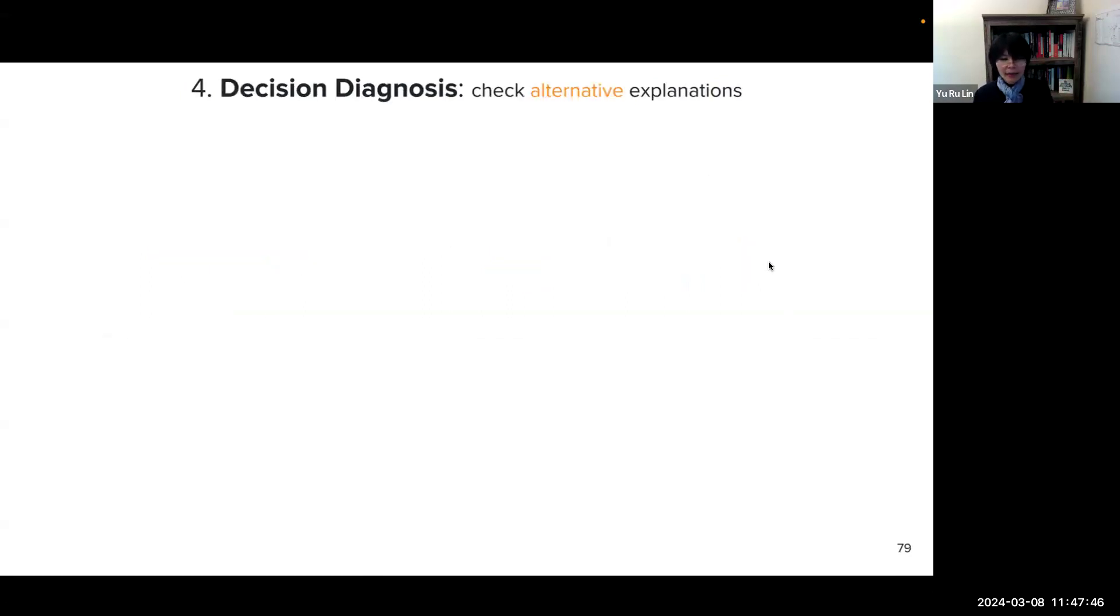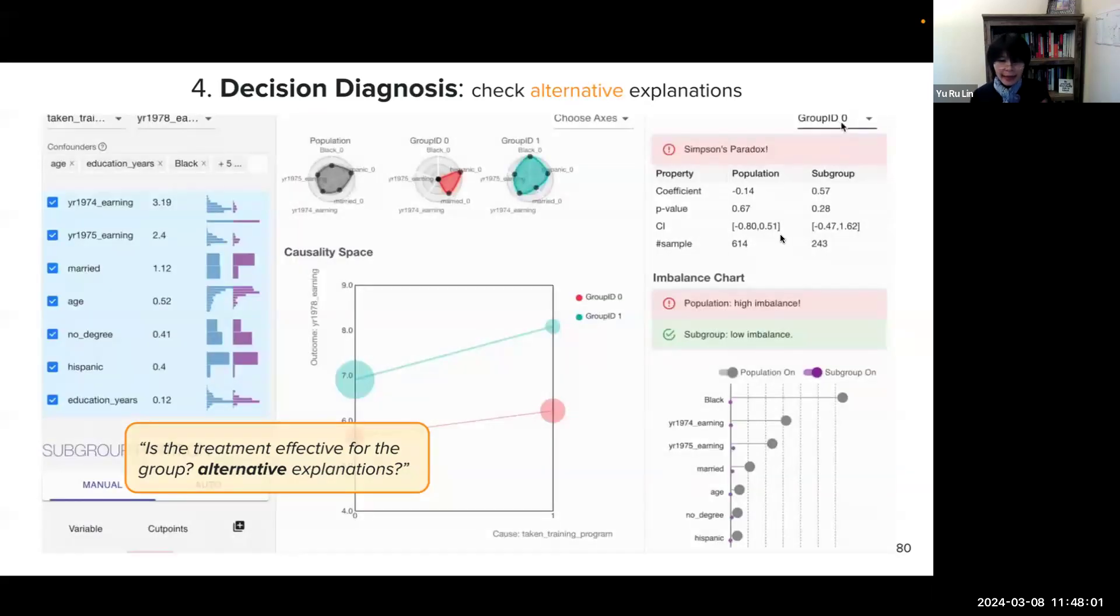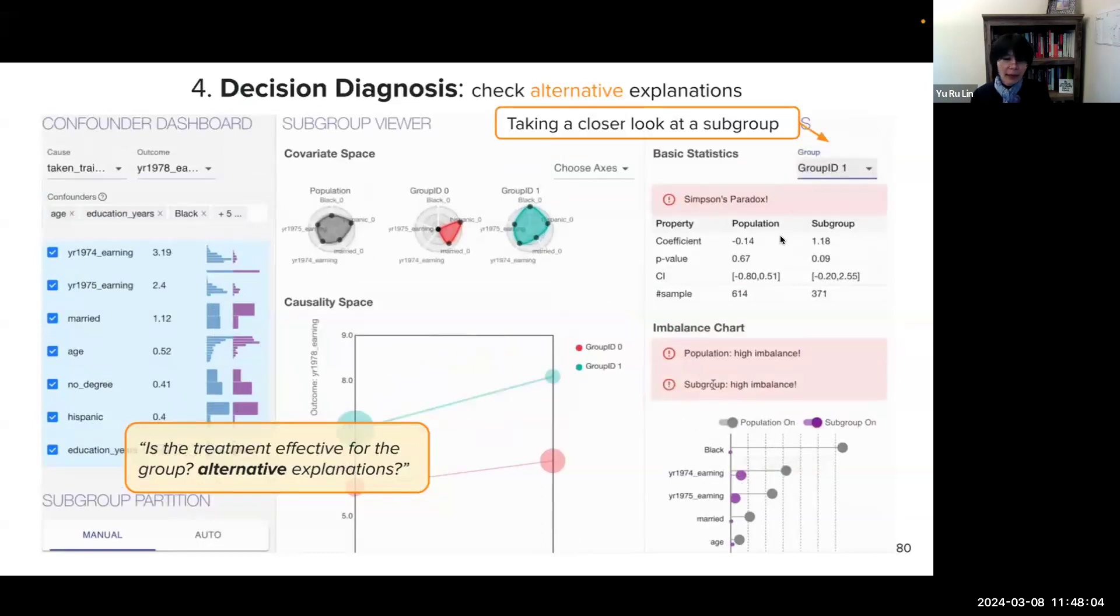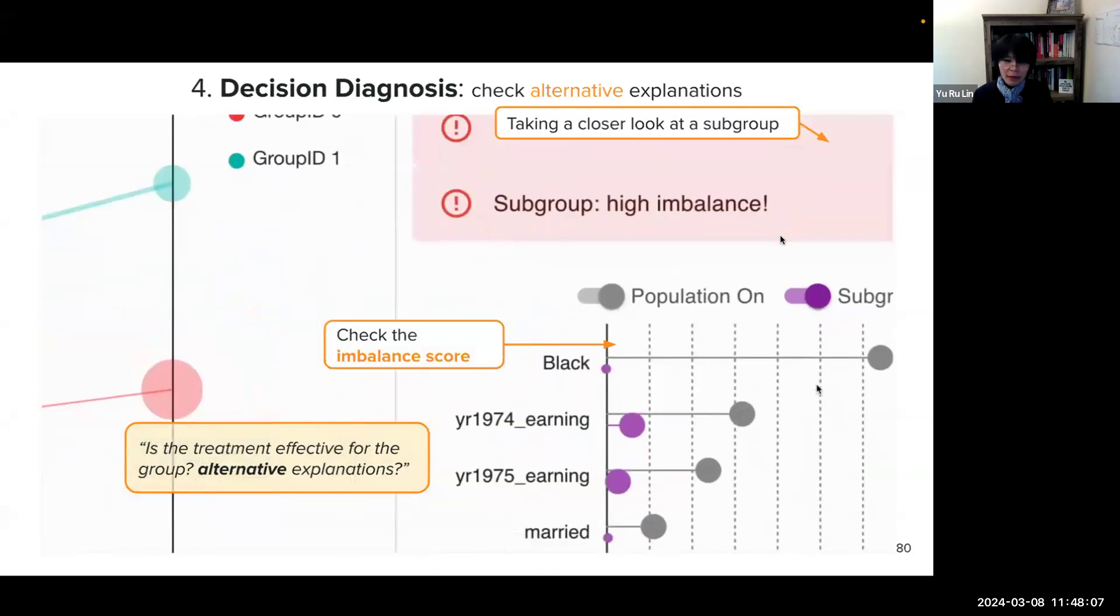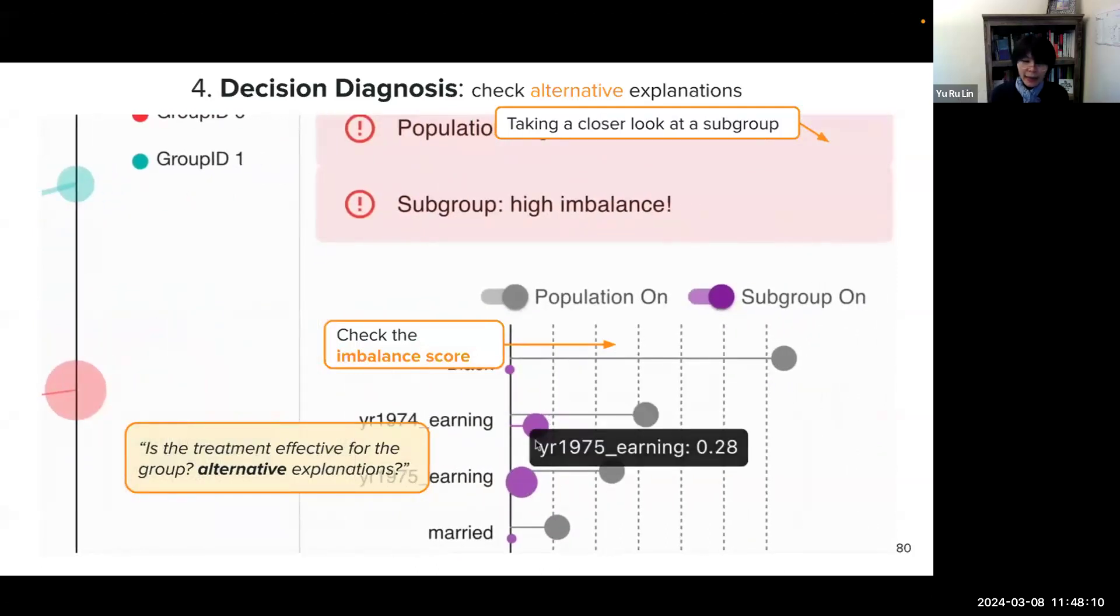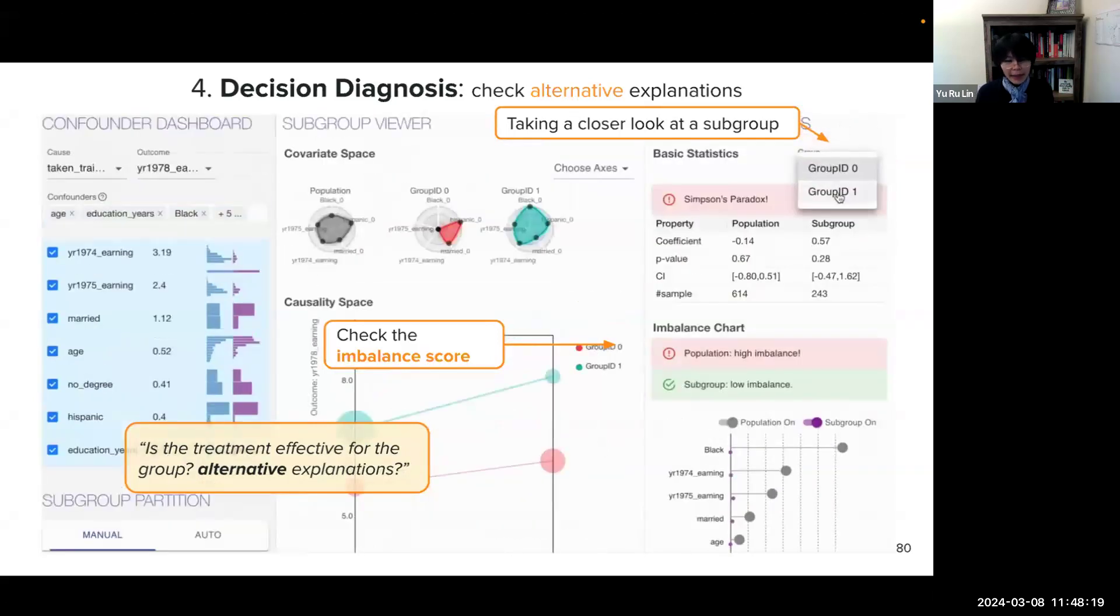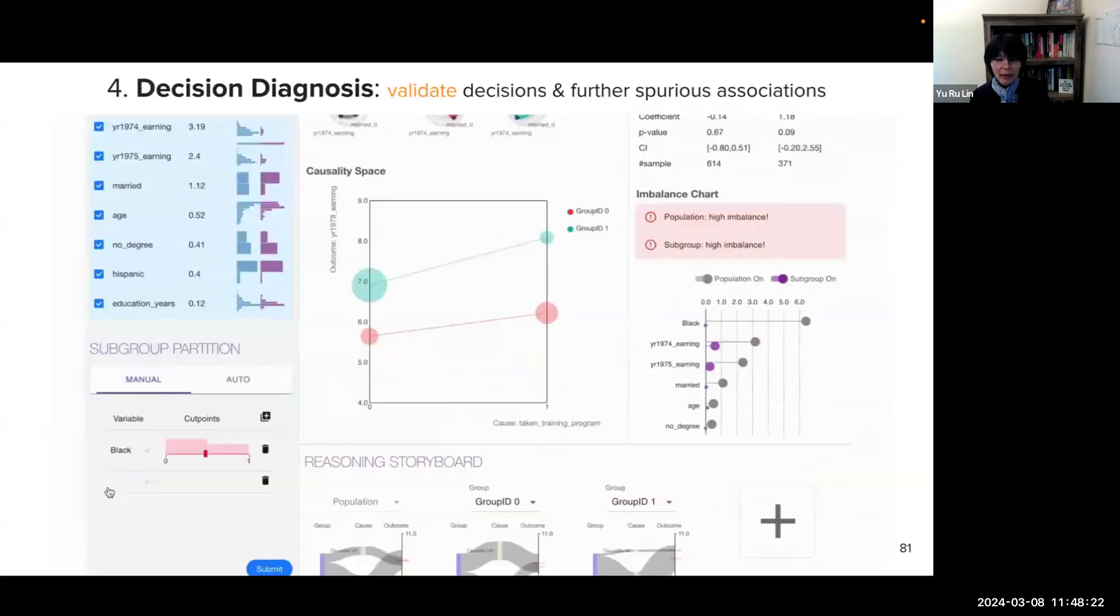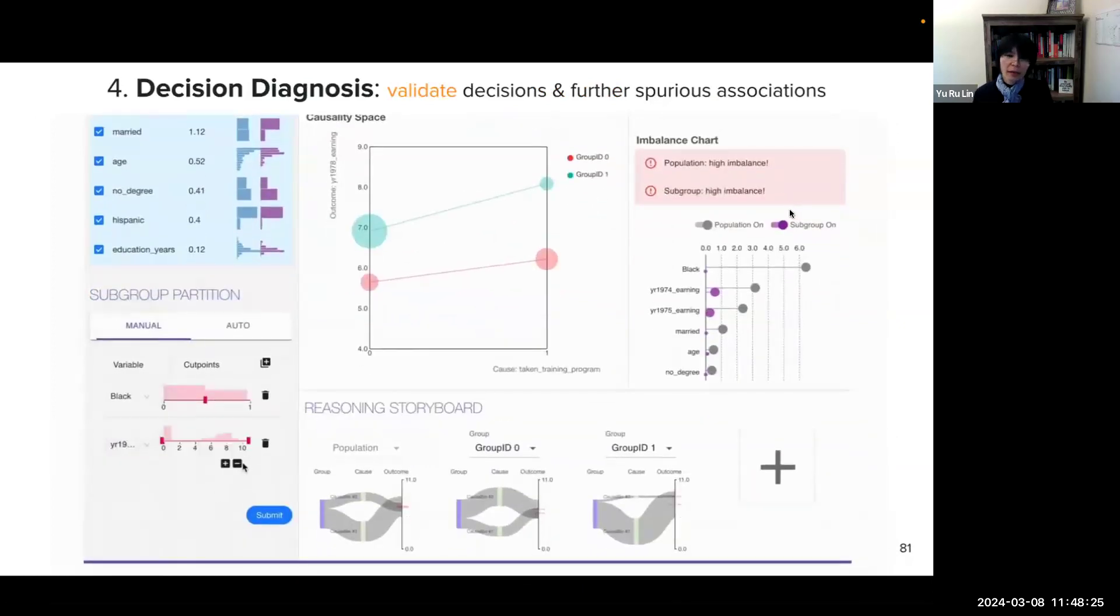And finally, the decision diagnosis. It answers, is the treatment effective for the group? Are there any other alternative explanations? So users can now take a close look at any subgroups, and they can check the imbalance scores. When an imbalance score is high, meaning there's a heterogeneous association within a variable in the subgroup. And this will recommend users to further break down the variable to check whether there's a nested paradoxical association.